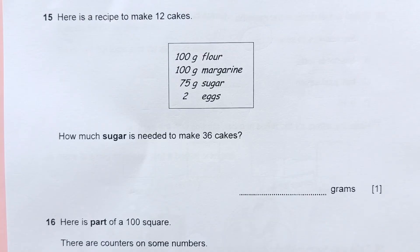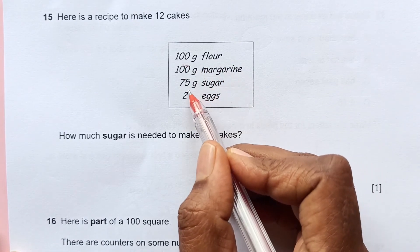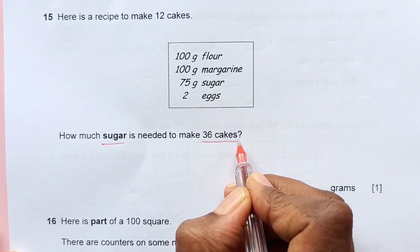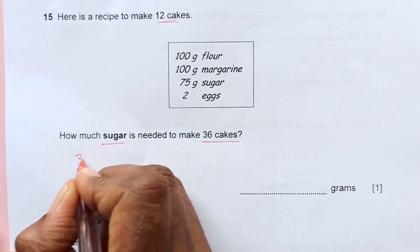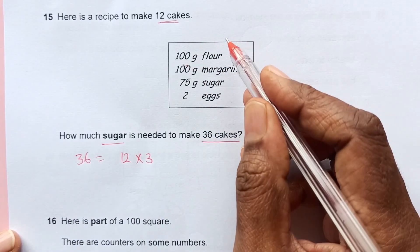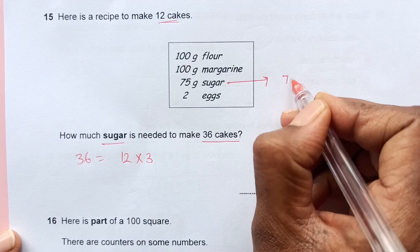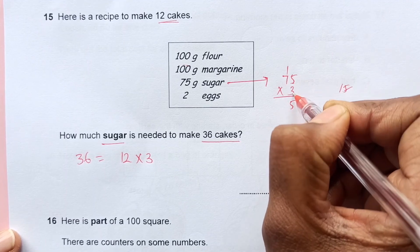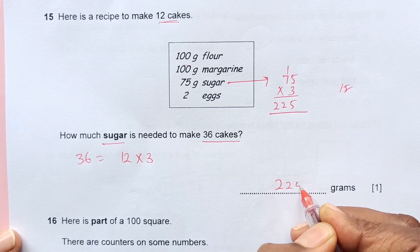Number 15. Here is a recipe to make 12 cakes: 100 grams flour, 100 grams margarine, 75 grams sugar, 2 eggs. How much sugar is needed to make 36 cakes? This is a recipe for 12 cakes. 36 can be written as 12 times 3. So all the ingredients will be times 3. We are looking for sugar. Sugar is 75. So 75 times 3: 5 times 3 is 15, 7 times 3 is 21 plus 1 is 22. This is 225 grams.